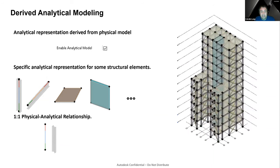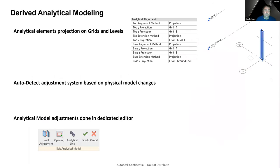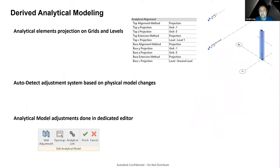In the current solution there is only a one-to-one relationship. For each physical element, only one analytical element can be created and only one specific type. For a linear element we have an analytical stick, and for a surface physical element we have an analytical panel. You cannot represent a physical beam as an analytical panel, though there are edge cases.